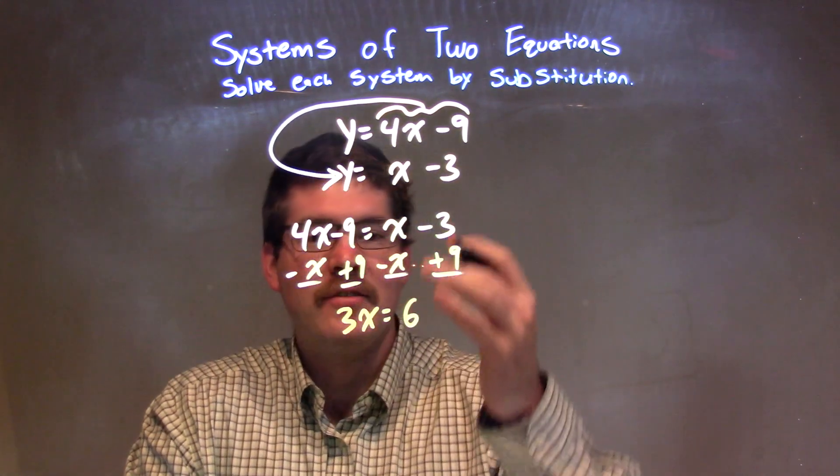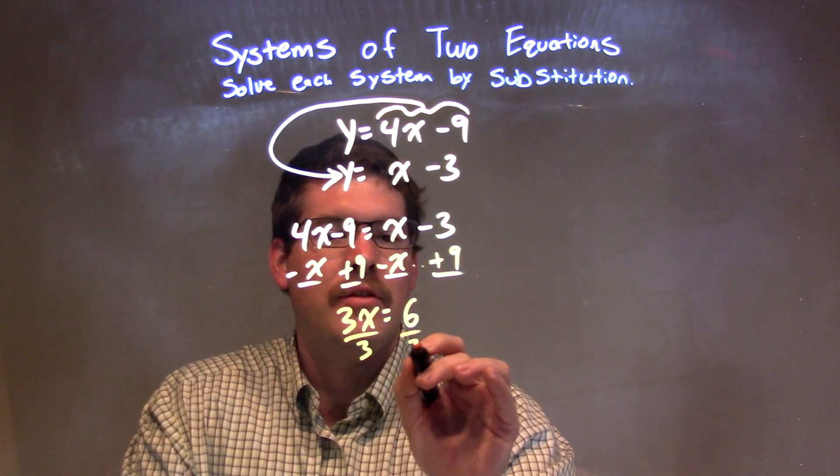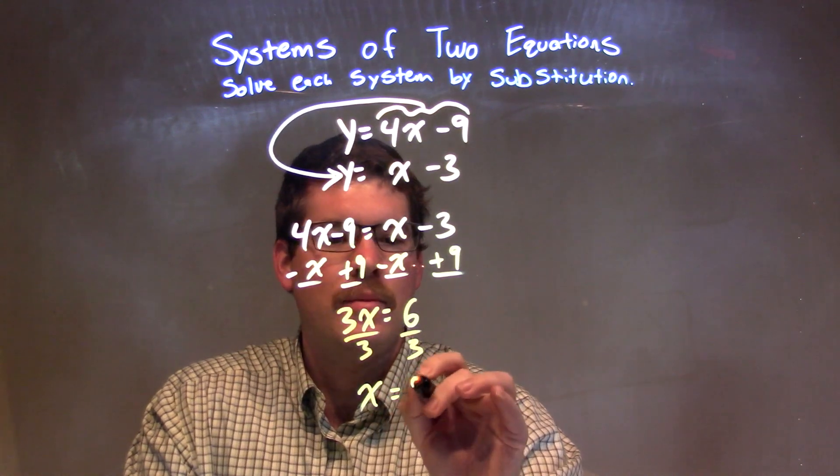From there, I want to get x by itself. I'm going to divide both sides by 3, leaving me x equals positive 2.